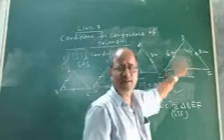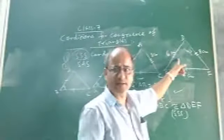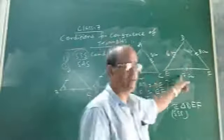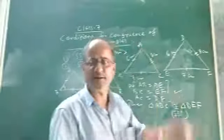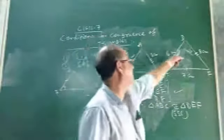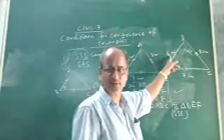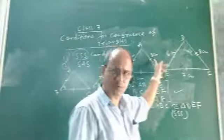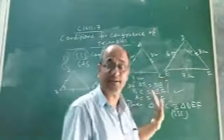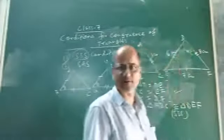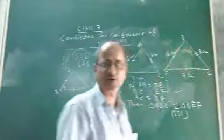Suppose you are given that AB equals 6cm and DE equals 6cm — so this pair of corresponding sides are equal in length. BC and EF are another pair; suppose they are 7cm each. Then AC and DF, the third pair of corresponding sides, are also equal in length — suppose 8cm each. If AB equals DE, BC equals EF, and AC equals DF, then we say that the three pairs of corresponding sides of the two triangles are equal.